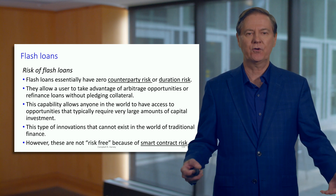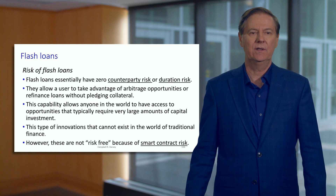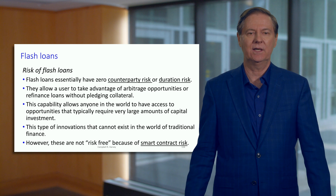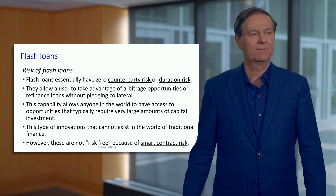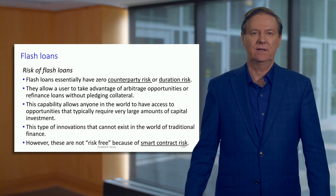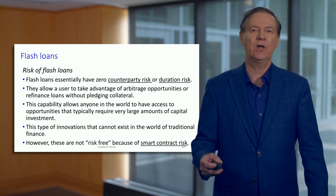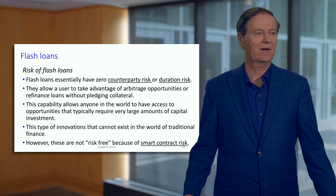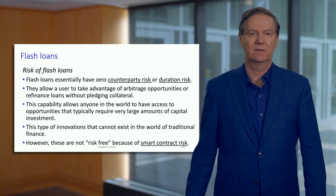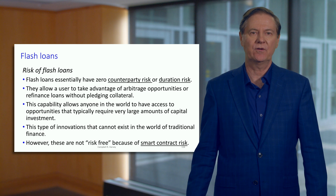This could be an arbitrage transaction, or it could be somebody refinancing their loan at a cheaper rate — there are lots of possibilities. This also speaks to the democracy of decentralized finance: this mechanism is available to anybody. I'll show a transaction later where we don't know who it is — it might be somebody of modest means who takes out a flash loan equivalent to $200 million, does a series of transactions, pays it off, and makes a profit.